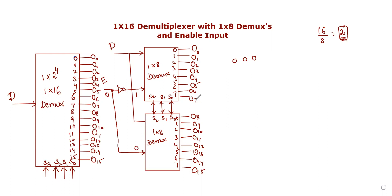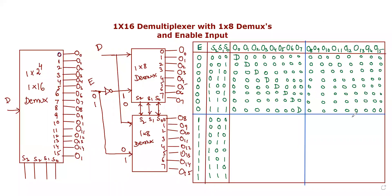So O0 through O7 will be transmitted one by one when the first demux is active. Similarly, O8 through O15 will be transmitted when the second demux is active. That's why we use a truth table. So we are going to draw the truth table for this 1 by 16 D multiplexer using 1 by 8 D muxes.